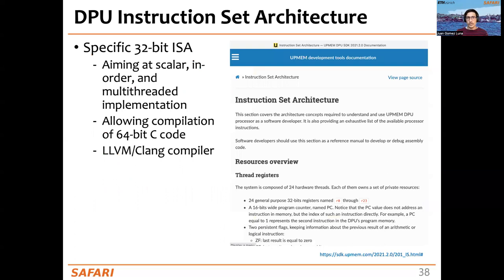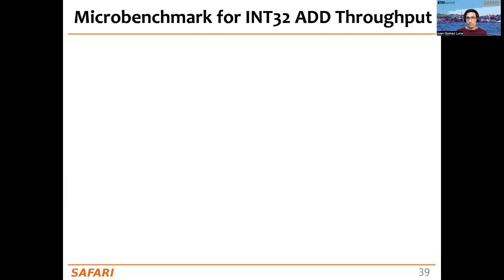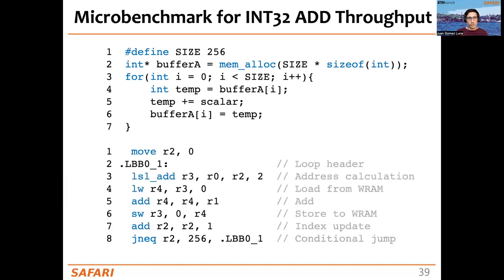The pipeline runs a 32-bit RISC ISA — not RISC-V, but a proprietary ISA. You can find many details about this instruction set architecture in the Upmem documentation. To show some sample code, here is a microbenchmark for 32-bit integer additions that we will use in the next lecture to analyze arithmetic throughput in the DPU. At the top is the C-based code as written when programming a DPU, and at the bottom is the compiled code.